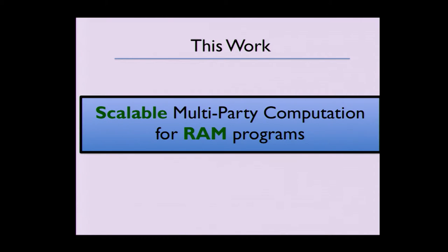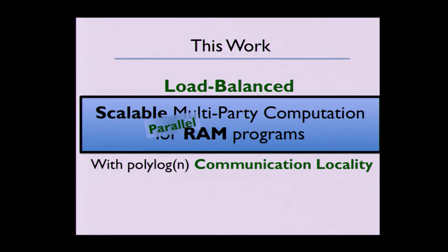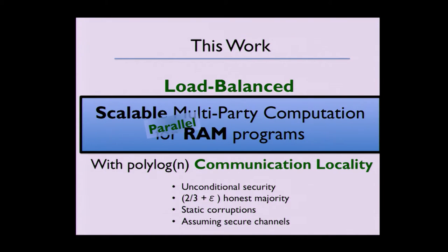In this work, we provide a protocol for load-balanced, scalable multi-party computation for parallel RAM programs with polylogarithmic in N communication locality. More explicitly, we consider unconditional security with an honest majority — our protocol requires slightly more than two-thirds honest with static corruptions and assuming secure channels.